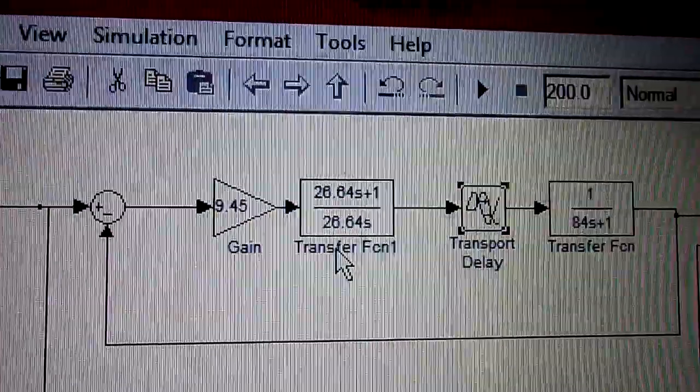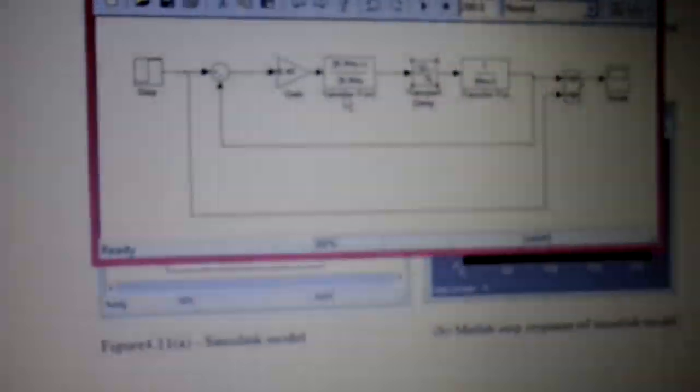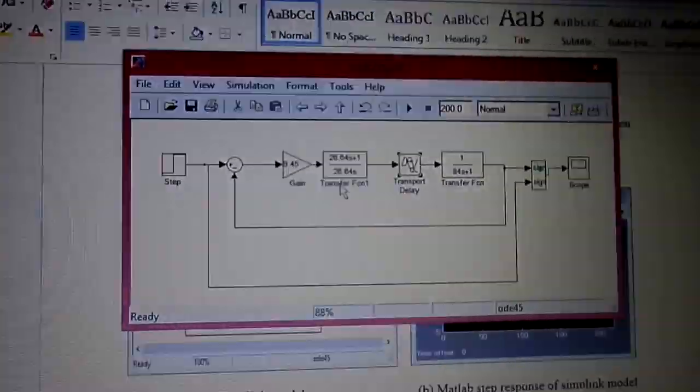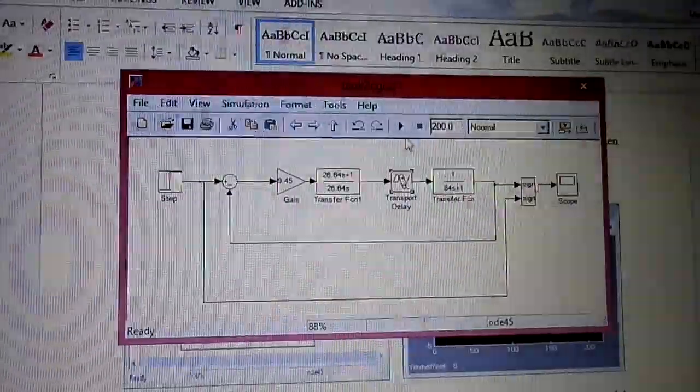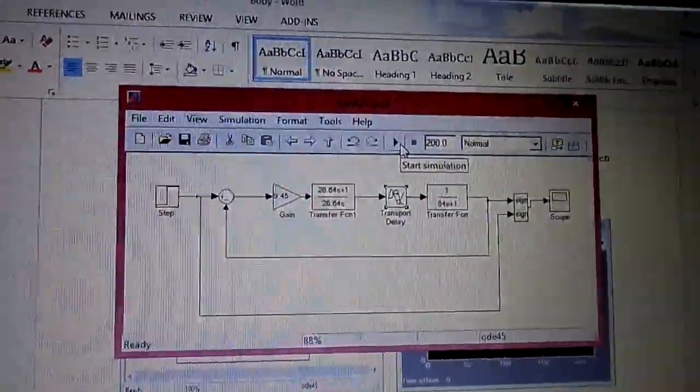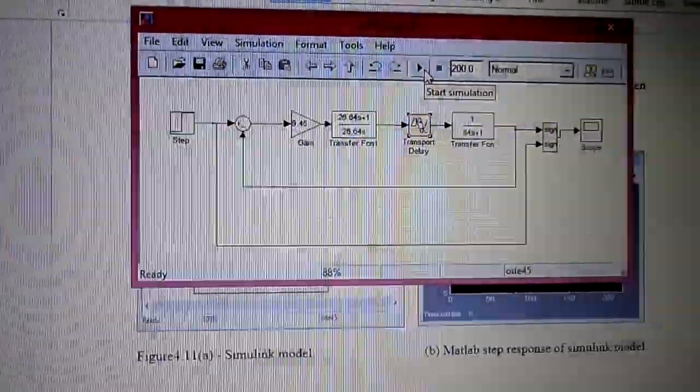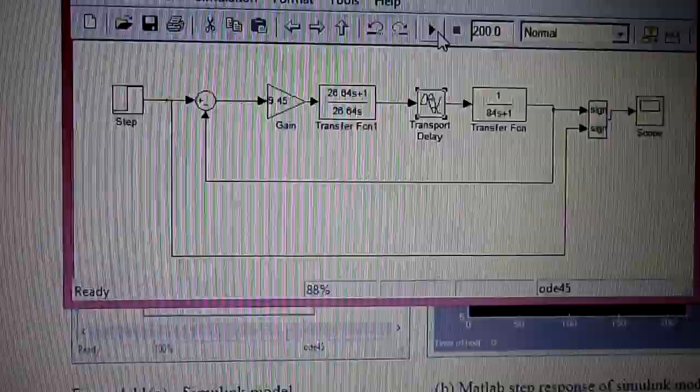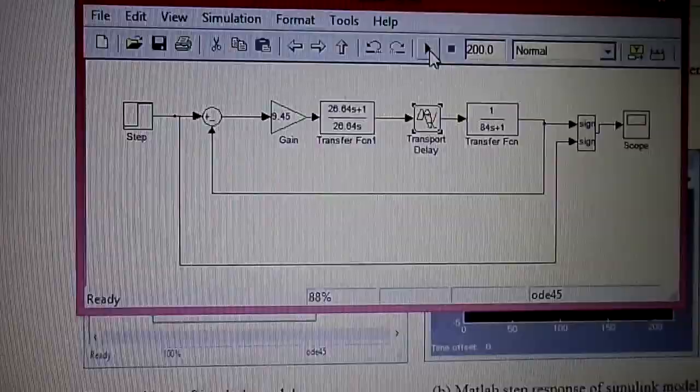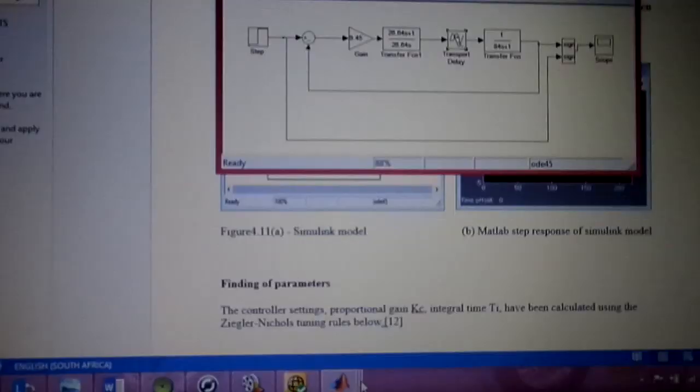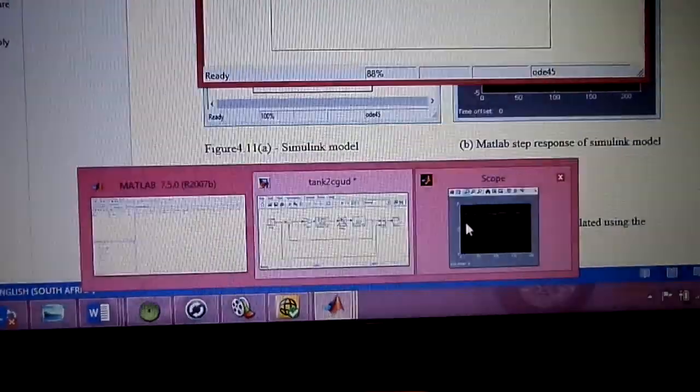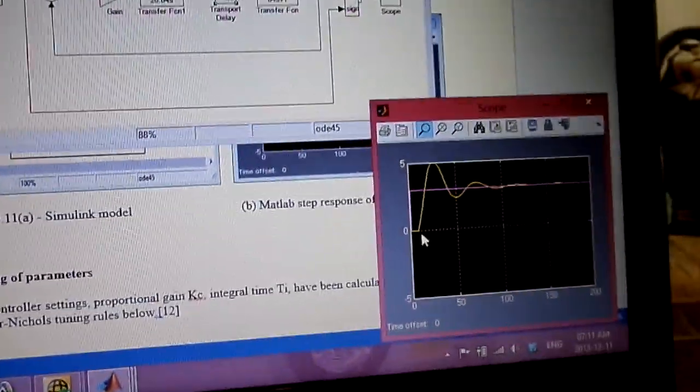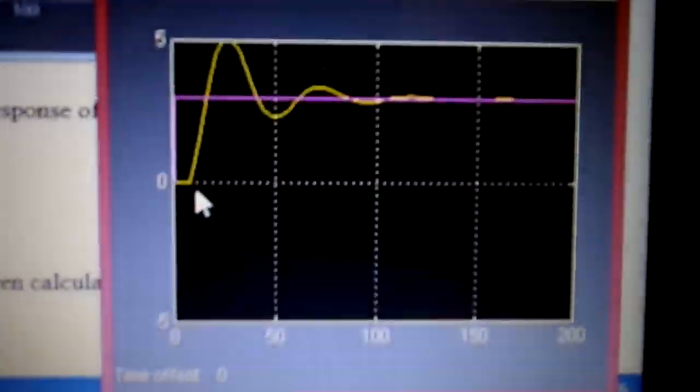Happy, yes. So now this method, Ziegler-Nichols mentioned that this is for quarter damping amplitude. Let's run it and let's see. And there we go, that's what we have.